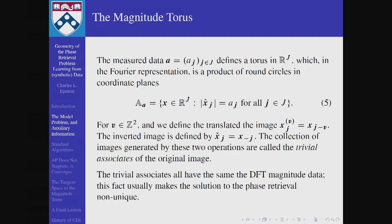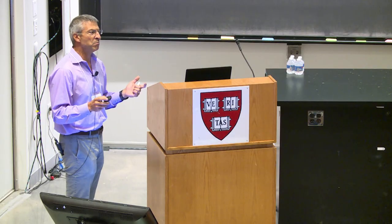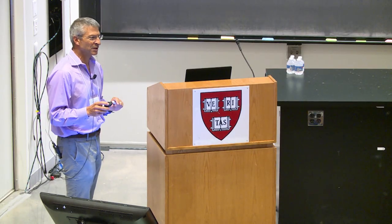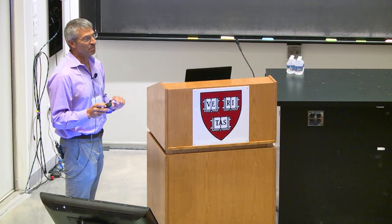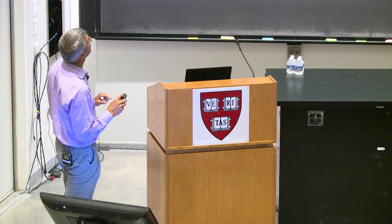The measured data defines a torus. A torus is of course a product of circles, and in fact in the Fourier representation it's a product of round circles in coordinate planes. For a typical image the cardinality of the set J would be a million for a two-dimensional image, or a billion for a three-dimensional image. So it's a product of a lot of circles — a very high dimensional problem.